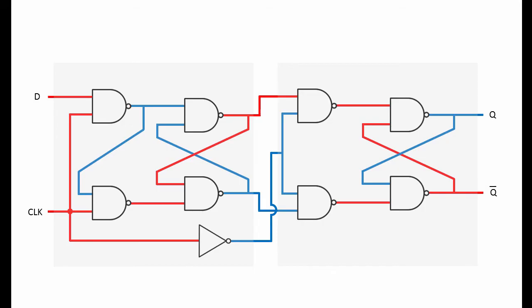Meanwhile the slave is disabled, so the new output from the flip-flop as a whole is not available, just yet. Then when the clock signal falls to low again, the slave is enabled. Data is passed from the master to the slave, and is therefore available at the output.